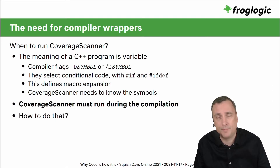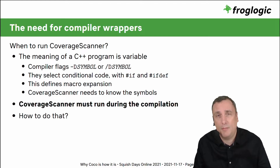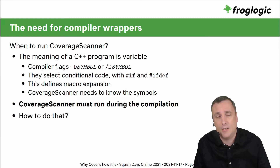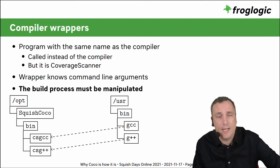Coverage Scanner sits in front of your real compiler but still makes use of it — it is not replacing it. Your source code may be subject to compiler flags, #ifdef preprocessor directives, and macros. Coverage Scanner uses the real compiler's preprocessor to determine all macro expansions, which is why instrumentation must happen at compile time. It is not a static analysis done upfront — without this, you might miss code disabled by some compile-time switches.